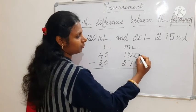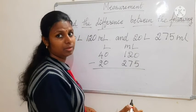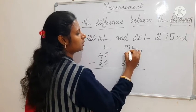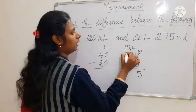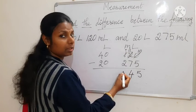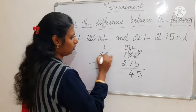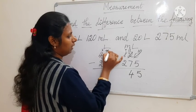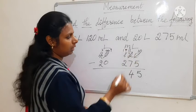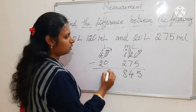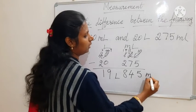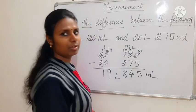So shall we subtract now. 0 minus 5 — not possible, so we borrow. It comes 10 and 1. So 10 minus 5 is 5. Then 11 minus 7 is 4. Then we borrow: 3 and here 10, then 9, it becomes 10. 10 minus 2 is 8. Then 9 minus 0 is 9. Then 3 minus 2 is 1. So the answer is 19 litre and 845 milliliter.